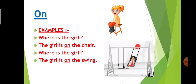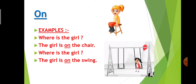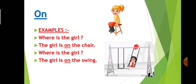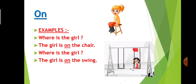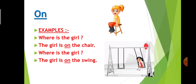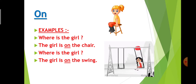Next preposition is 'on'. On means above the surface. In the first picture, just tell me where is the girl. The girl is on the chair. You can see the girl is sitting on the chair and the girl is touching the surface of the chair, so we are using preposition 'on'. The girl is on the chair. Just see the next picture and tell me where is the girl. In the second picture, you can see the girl is on the swing. The girl is sitting on the swing and the girl is touching the surface of the swing, so we are using preposition 'on'. The girl is on the swing.